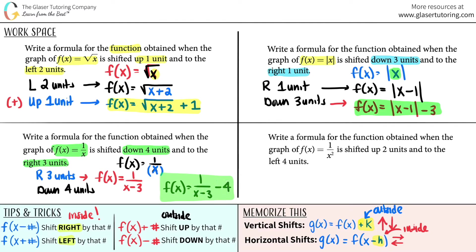One last one. Write a formula for the function obtained when the graph of f(x) equals 1 over x squared is shifted up two units and to the left four units. We have a left shift of four units and an up shift of two units. The original function is f(x) equals 1 over x squared.